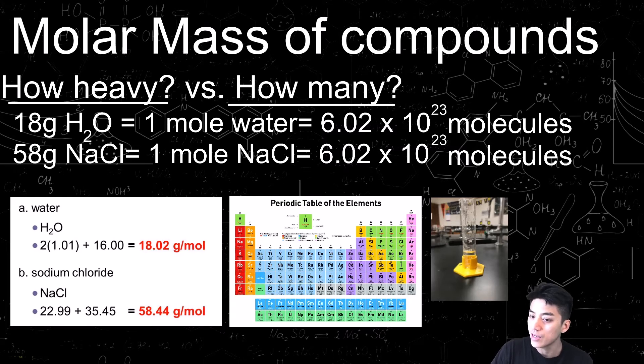For sodium chloride, the formula is NaCl, so the mass of sodium is 22.99, and we're going to add that to the mass of chlorine, which is 35.45, giving us 58.44 grams per mole for the molar mass of sodium chloride. So how heavy is it? 58 grams. We've got 1 mole of salt, which means how many, and how many is 6.02 times 10 to the 23rd molecules.